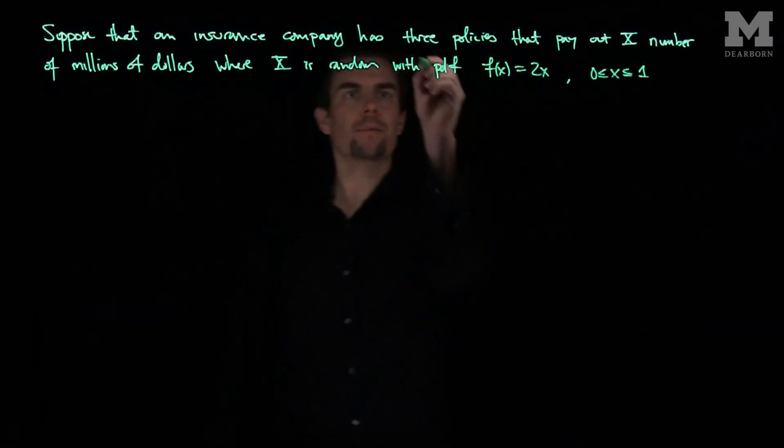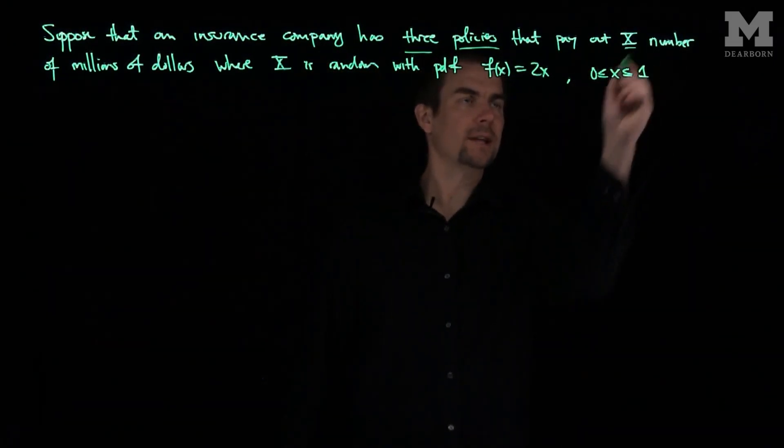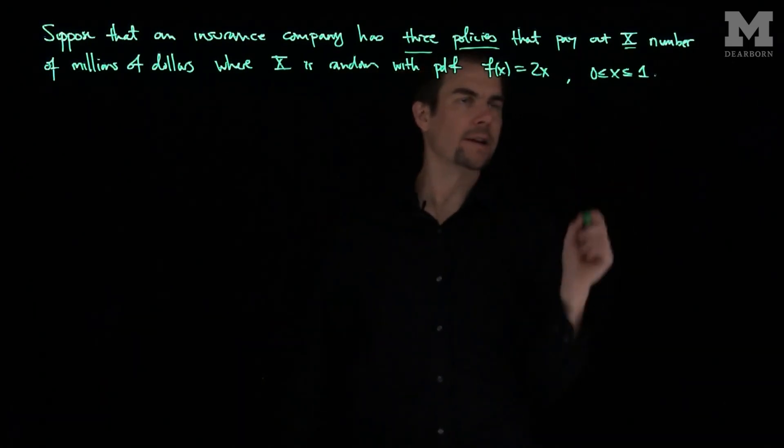And there are three of these policies, and we're going to assume that each of these policies pays out X. So we have three identical copies of this.